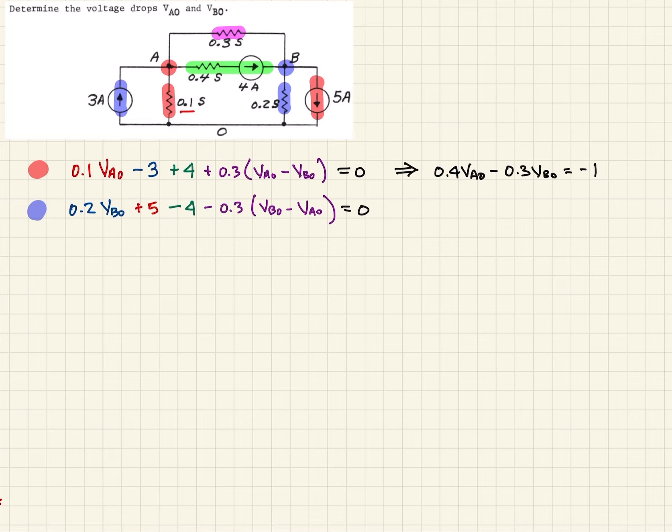And then the blue, or node B equation, becomes minus 0.3 VA0 and then plus 0.5 VB0. And again, that's equal to minus 1.